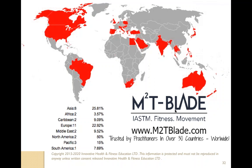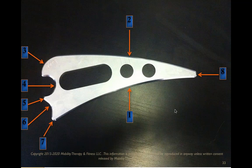Here's a picture of the tool — you can see all eight treatment edges numbered 1 through 8. Numbers 1 and 2 are our assessment edges. Numbers 3 through 8 are our treatment points. You can affect all areas and all tissues of the body with each one of these points.